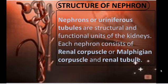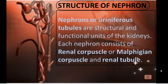Each nephron consists of a renal corpuscle, also called the Malpighian corpuscle. The renal corpuscle is a blood filtering component present in the kidney, used for purifying blood. Each nephron also consists of renal tubules - kidney tubes. Each kidney consists of more than one million nephrons.